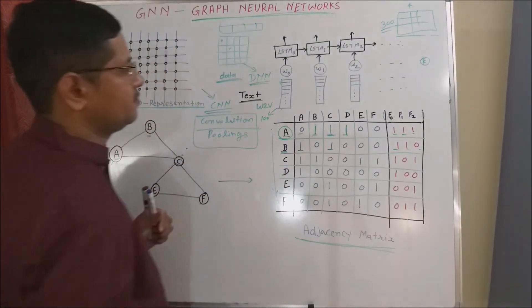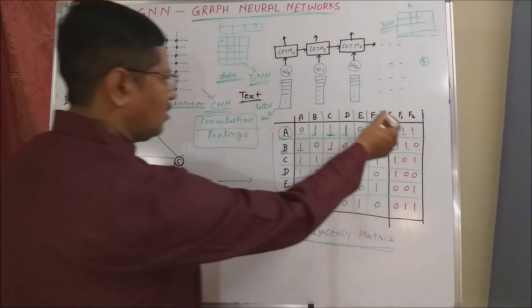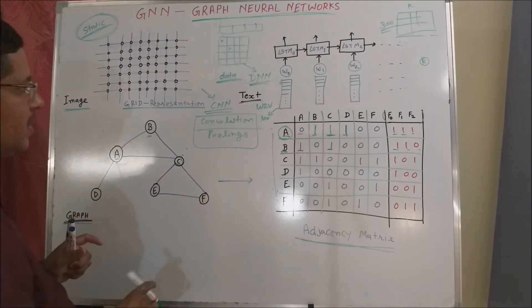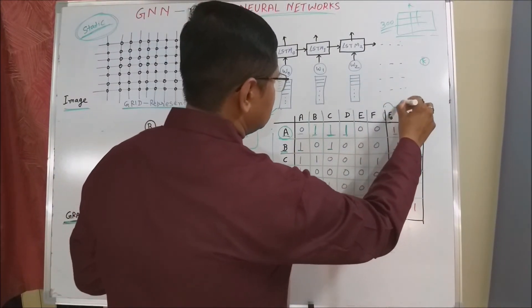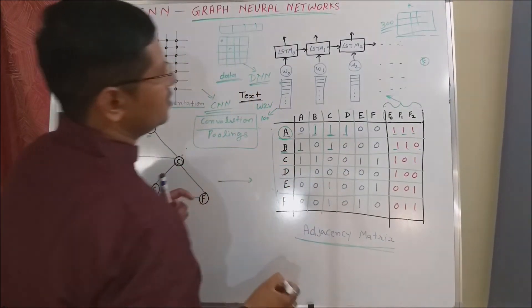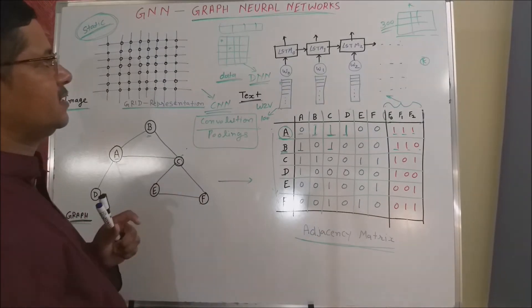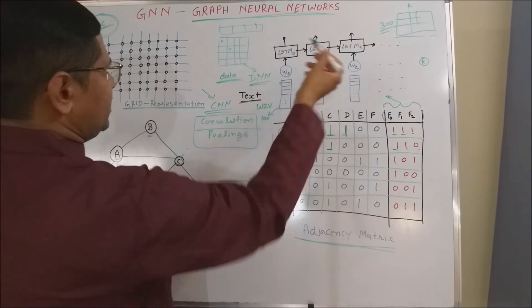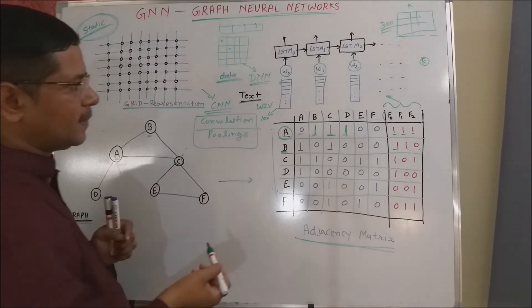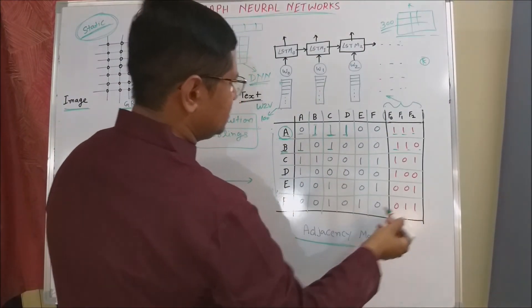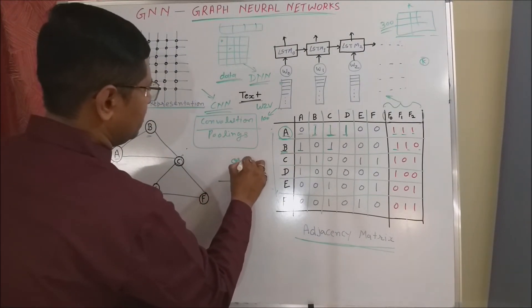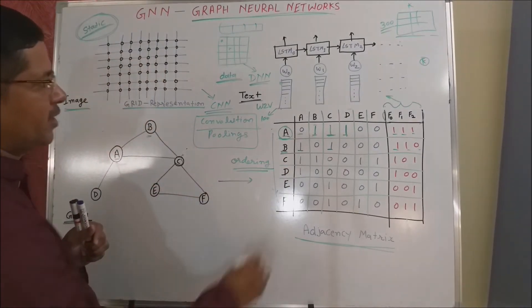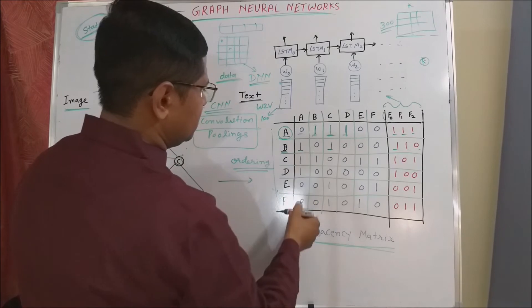Now what will be the problem if we pass those features directly through any of those kinds of neural network architecture like deep neural network architecture, CNN, or LSTM kind of architectures? The major problem is ordering of node because all the features are associated with the node orders.